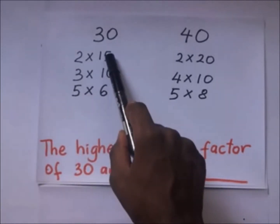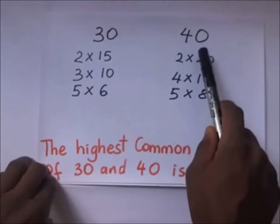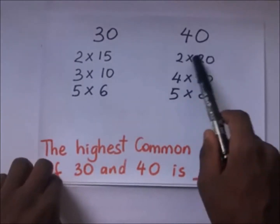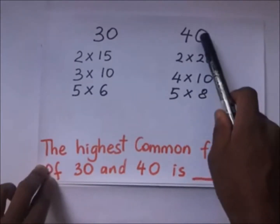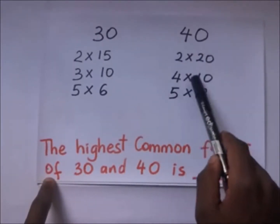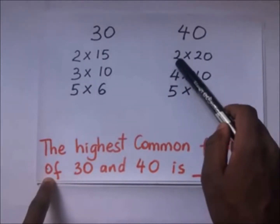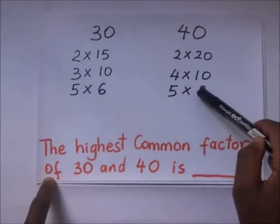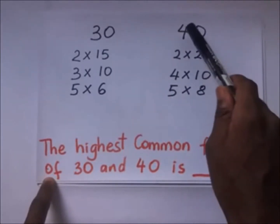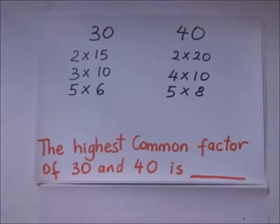6, 10, and 15 are all factors of 30. Now for 40, these are numbers you multiply to get 40: 2 times 20 is 40, 4 times 10 is 40, 5 times 8 is 40. So 2, 4, 5, 8, 10, and 20 are also factors of 40.